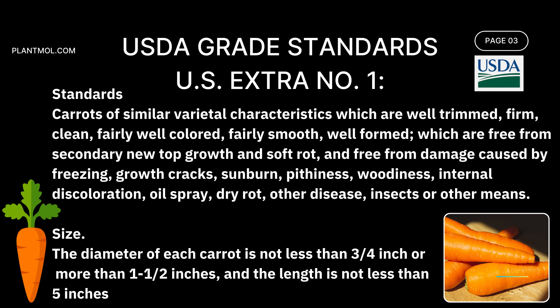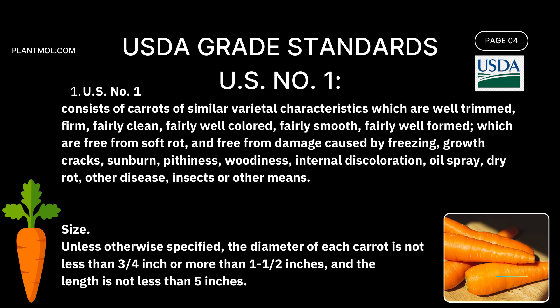The second standard is called U.S. Number One, which consists of carrots of similar varietal characteristics that are well-trimmed, firm, fairly clean, fairly well-colored, fairly smooth, fairly well-formed, which are free from soft rot and free from damage caused by freezing, growth cracks, sunburn, pithiness, woodiness, and internal discoloration.